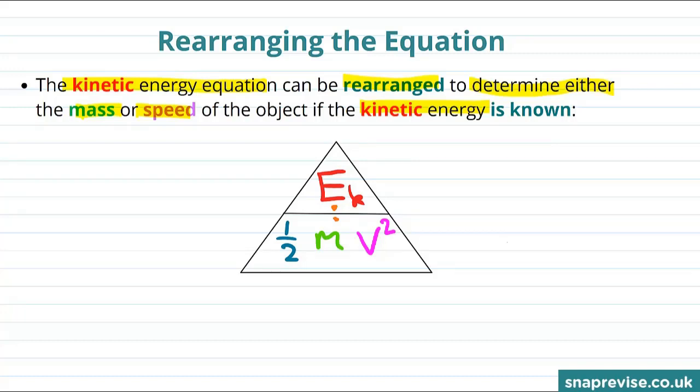So for example, if I wanted to find out the value of the mass, then I would imagine covering up the mass with my thumb and reading off what's left. What's left is the kinetic energy divided by a half and divided by the velocity or the speed squared.